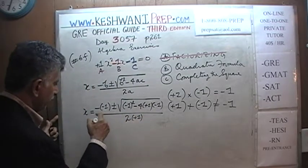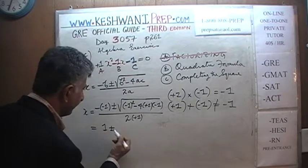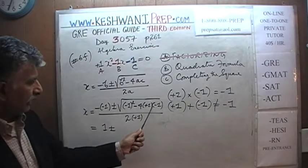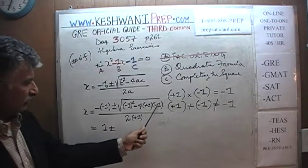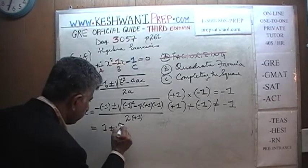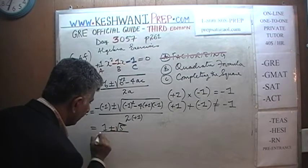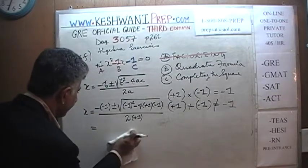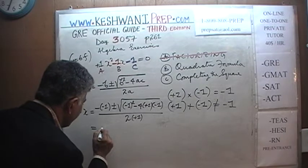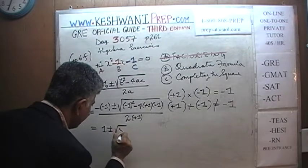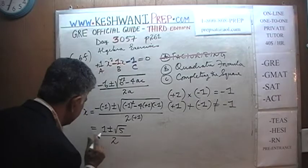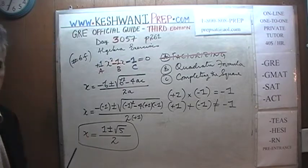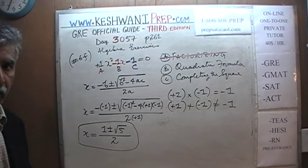Negative and negative is positive, so it's just 1 plus or minus the square root of: negative one squared is 1, and 4 times negative times negative is positive, so this quantity is 4. 1 plus 4 is 5. So it's 1 plus or minus square root of 5, over 2. Those are the two solutions.